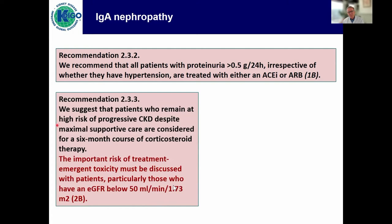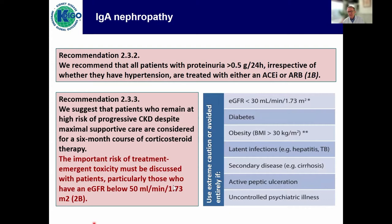For those patients who remain at high risk for progressive CKD despite maximal care, they're considered for a six-month course of corticosteroids. We have added that you need to discuss treatment-emerging toxicity with your patients, in particular if the GFR is below 50. You should use extreme caution or avoid steroids if the GFR is below 30, if there's diabetes — and look at this — obesity. I see so many patients for second opinion and in comes a grossly obese person. What is the likelihood I cure obesity with a corticosteroid? It simply isn't there.